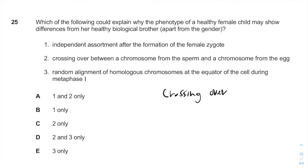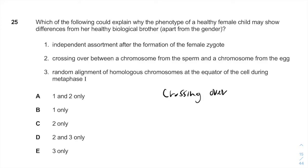Therefore, independent assortment after the formation of the female zygote doesn't occur, because after the formation of the zygote you won't have crossing over or independent assortment of the alleles. So, option one is not correct.